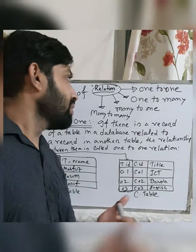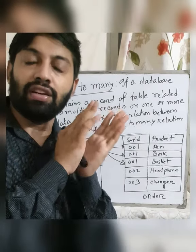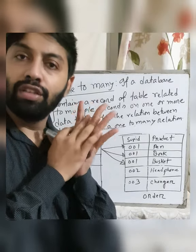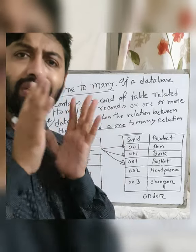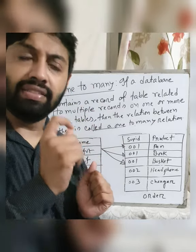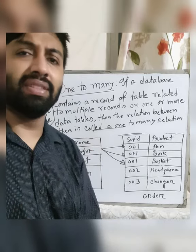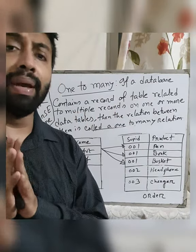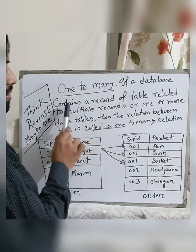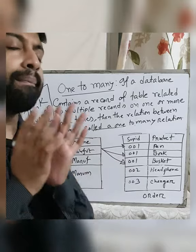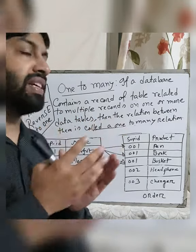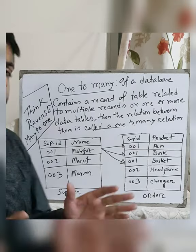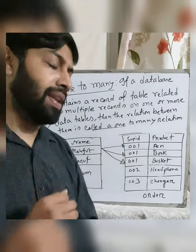Now I will talk about the second type: one-to-many. In this relationship, a single entity in one table can be matched with multiple entries in another table. If a database contains a record of one table related to multiple records in one or more other tables, we call it a one-to-many relationship.